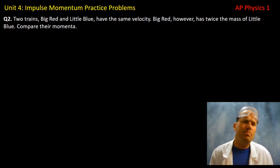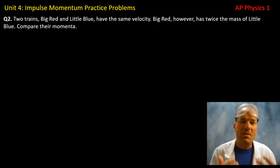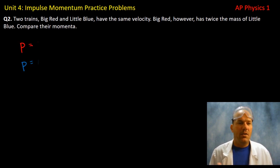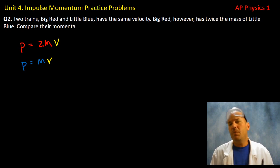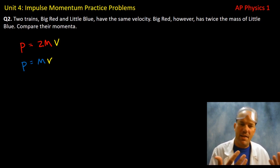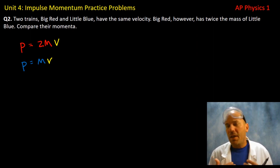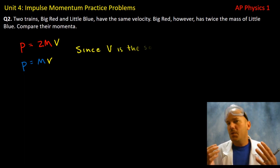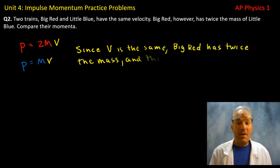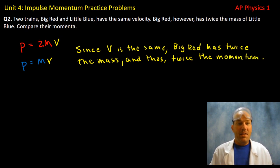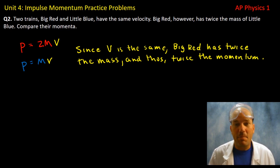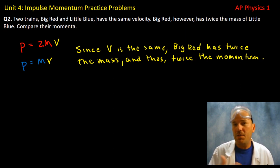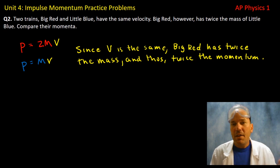Question two: there are two trains, Big Red and Little Blue. They both have the same velocity, but Big Red has twice the mass of Little Blue. Compare their momenta. Expressing mass as 2m for Big Red and m for Little Blue, with equal velocities, Big Red has two times the momentum. As always, you can make up numbers and plug them into equations to prove that relationship to yourself.